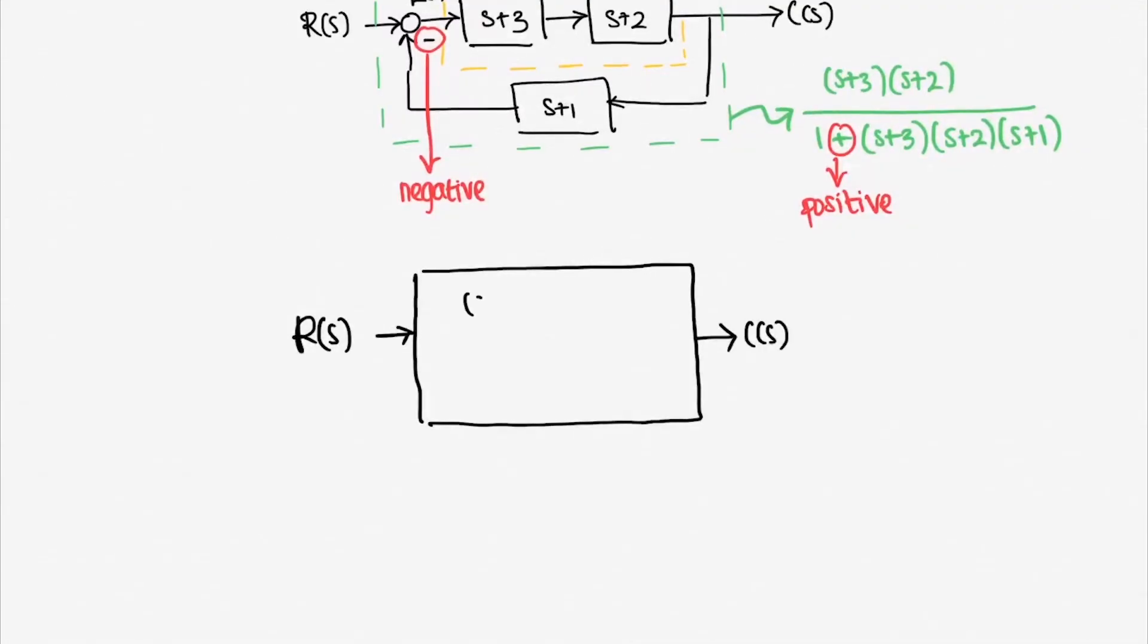It is easy to get lost about what we are going to do. Let me remind you that we are here interested in analyzing the stability of a system. Before analyzing the system, I said that we should know about transfer functions first. Hence, we talk about transfer function and block diagram reduction.